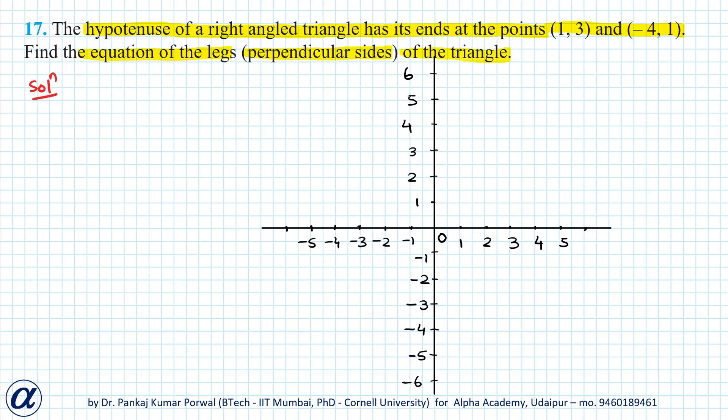So the two endpoints are (1,3) that is here, and (-4,1) that is here, and this is the hypotenuse. We want to find equations of the legs.